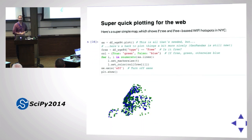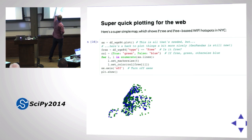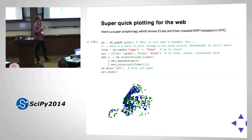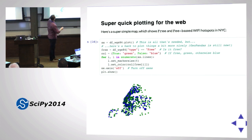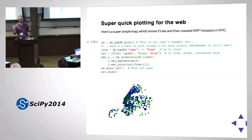Here's a super simple map which just plots free and fee-based Wi-Fi hotspots in New York City. df_wgs84.plot() - technically that's all that's needed, it'll make a plot. We're still working on the plotting functions in GeoPandas, so here's a bit of matplotlib code to make the points bigger and change colors. Really all you need is that first line - it makes the plot. Very simple, really just one line.